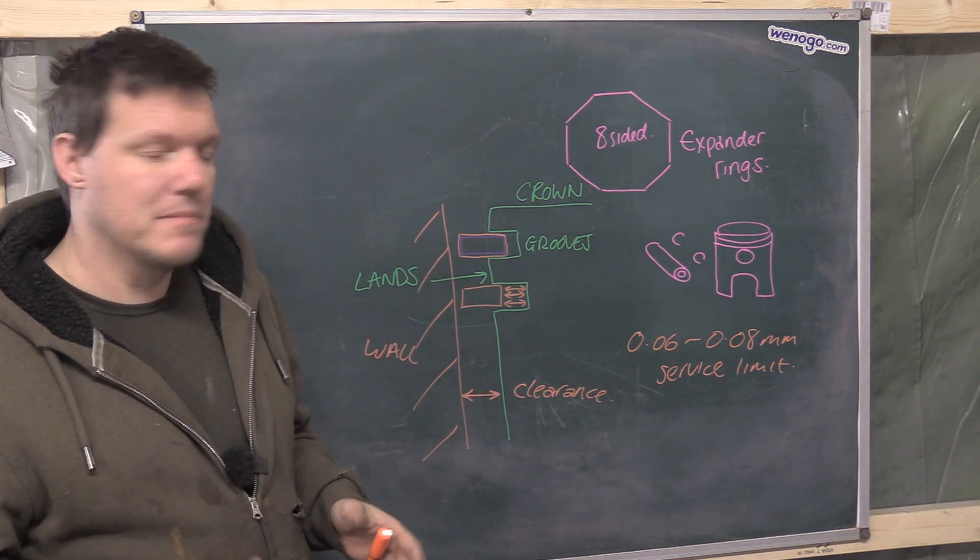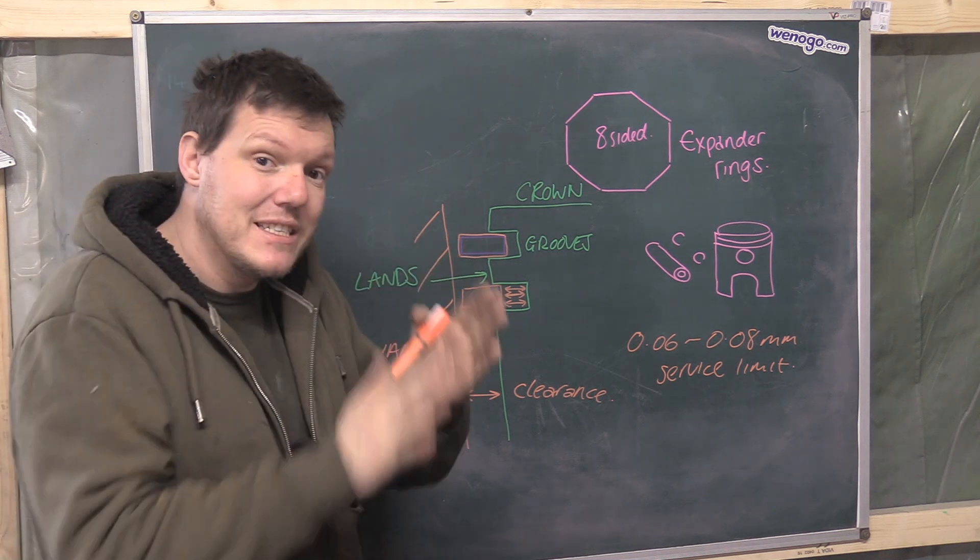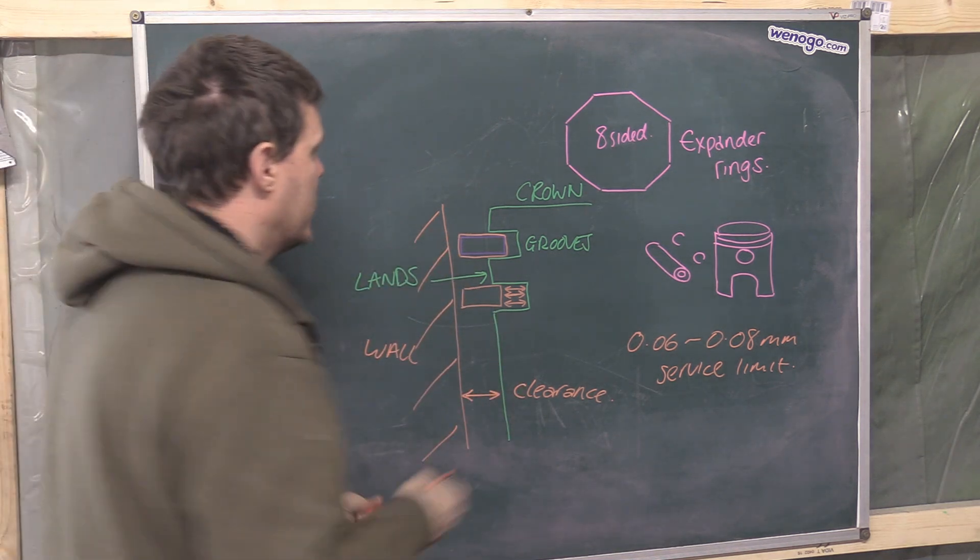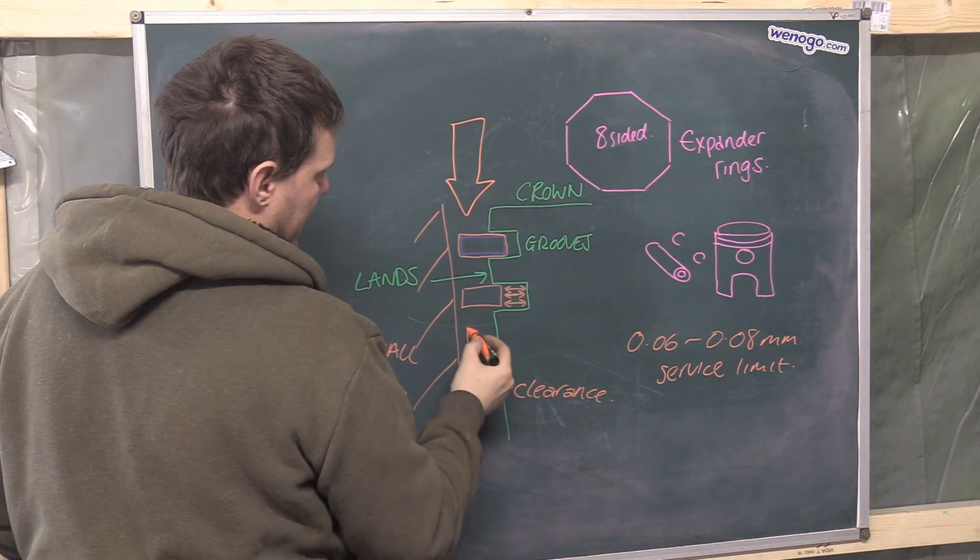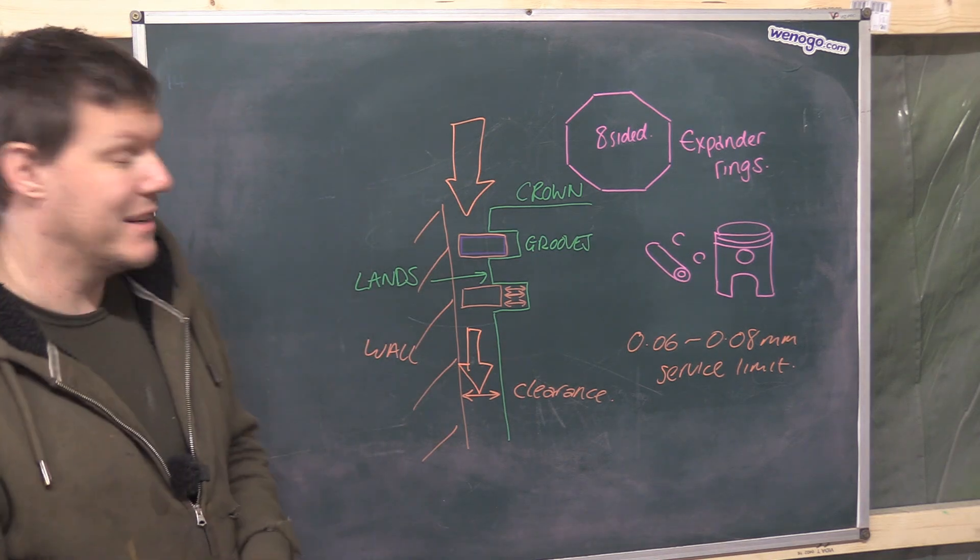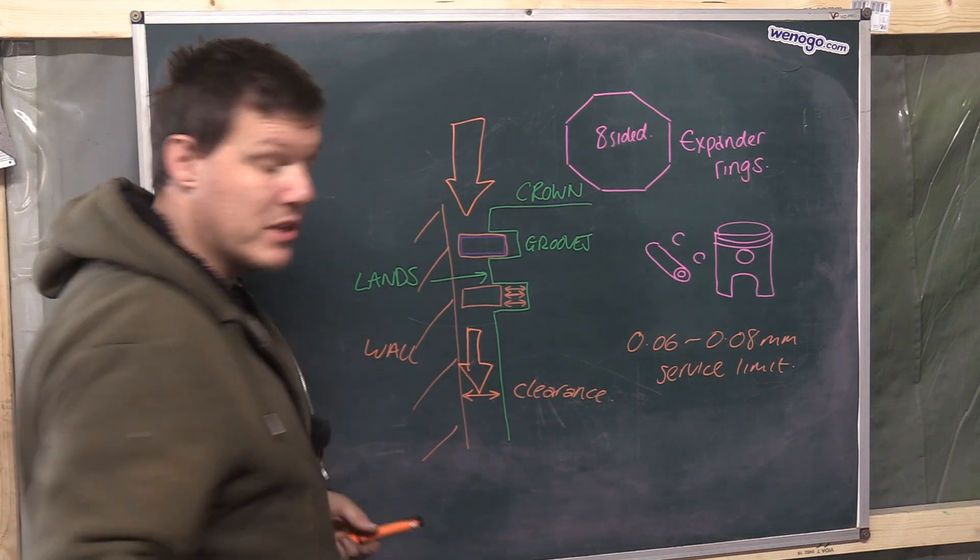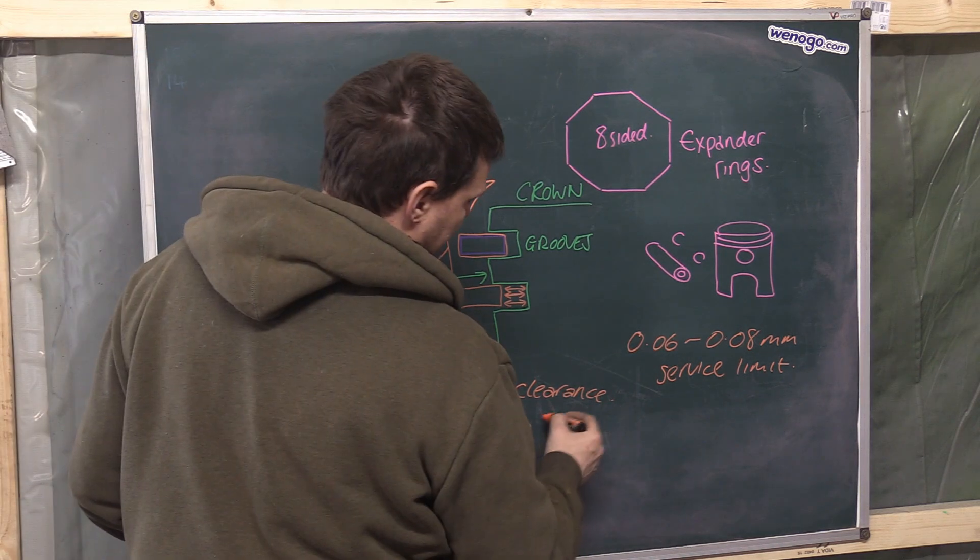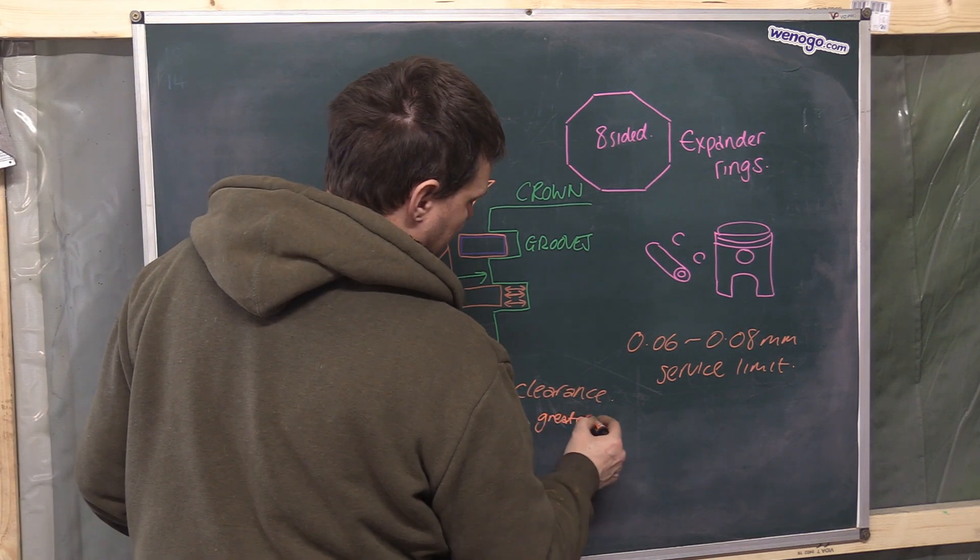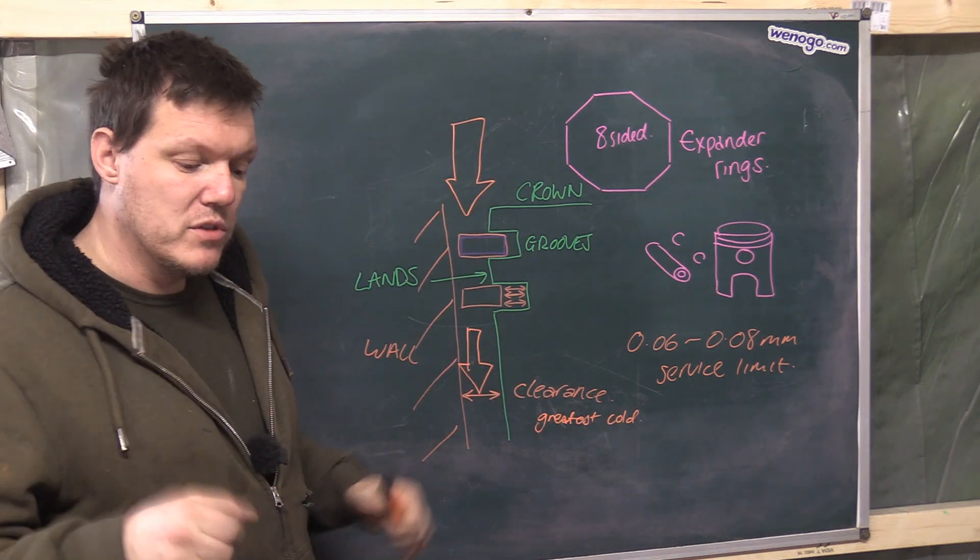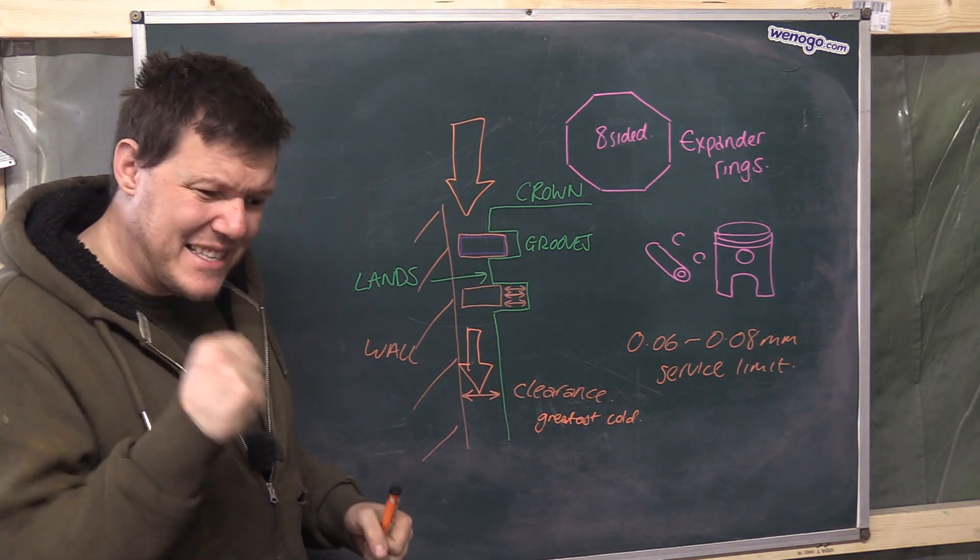Nowadays we've got stuff like Nikasil, Diacil, all these kind of jubbly bubblies that are much more thermally stable. So we can have a tighter clearance. Why do we want a tighter clearance? Blow-by. We don't want it passing the rings; they are seals at the end of the day. So what used to happen, especially on cold start, was that this clearance is the greatest when cold.